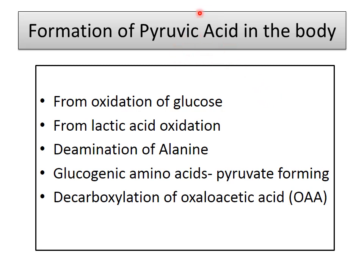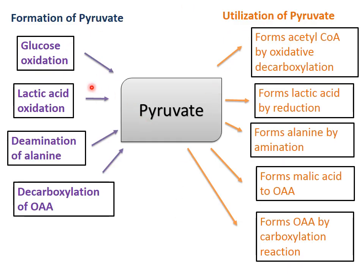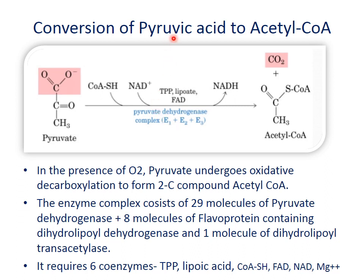Before starting the TCA cycle, we need to understand how pyruvic acid is formed. Pyruvic acid is formed by oxidation of glucose, by oxidation of lactic acid, by deamination of alanine, by glucogenic amino acids, and by decarboxylation of oxaloacetate. Pyruvate is utilized by oxidative decarboxylation to form acetyl coenzyme A, by reduction to form lactic acid, by amination to form alanine, and by carboxylation to form oxaloacetate. These are all the fates of the pyruvate molecule.